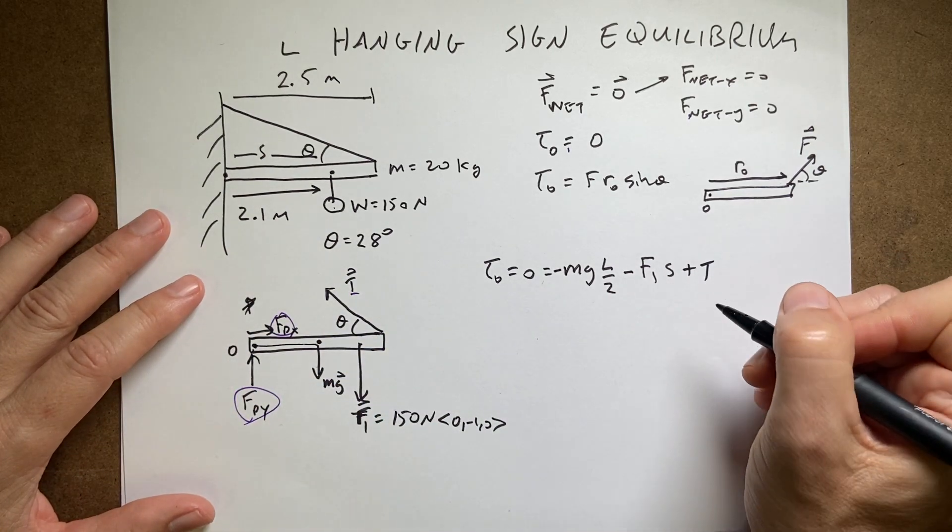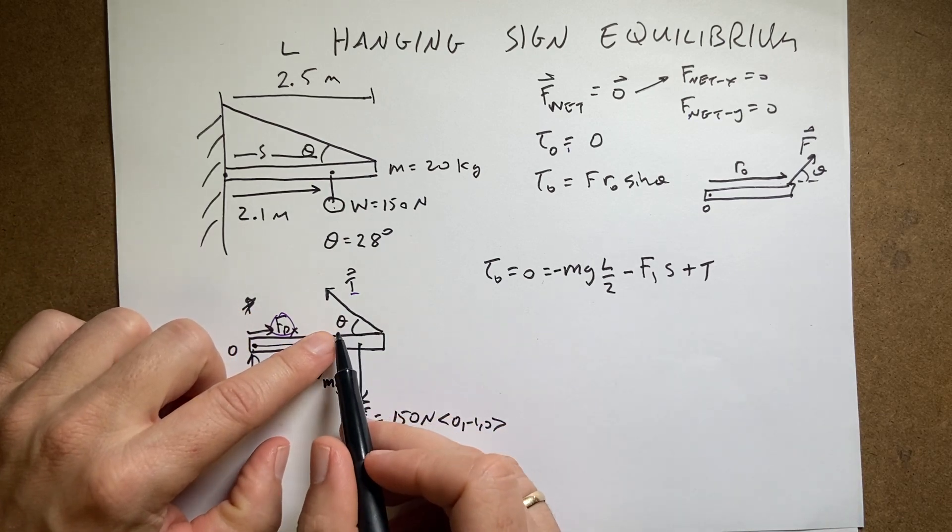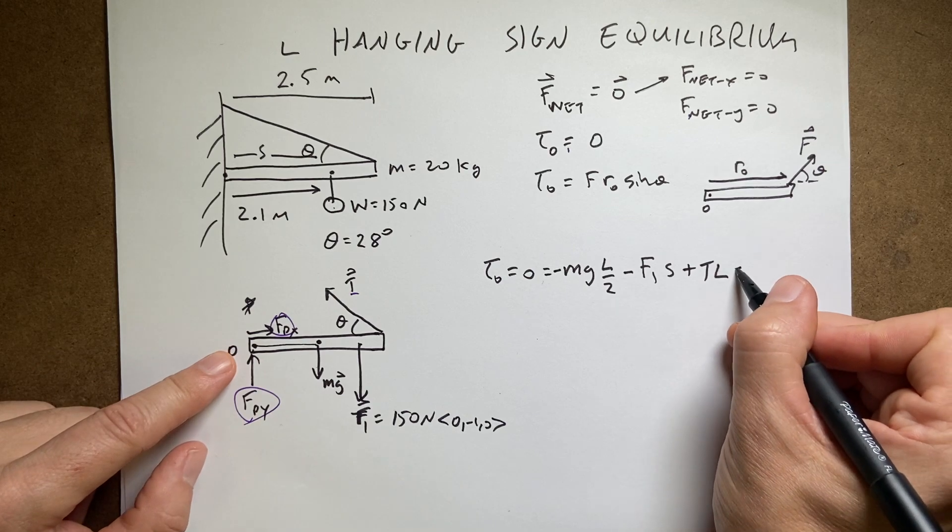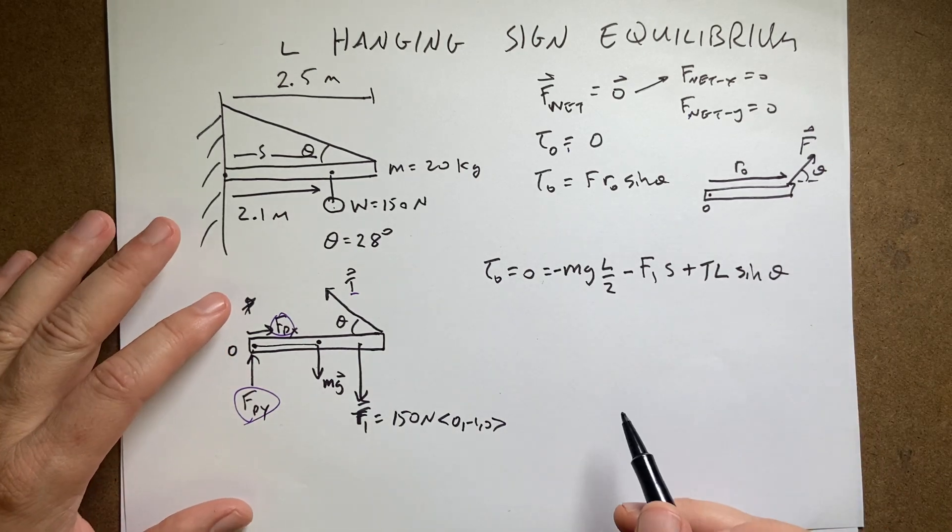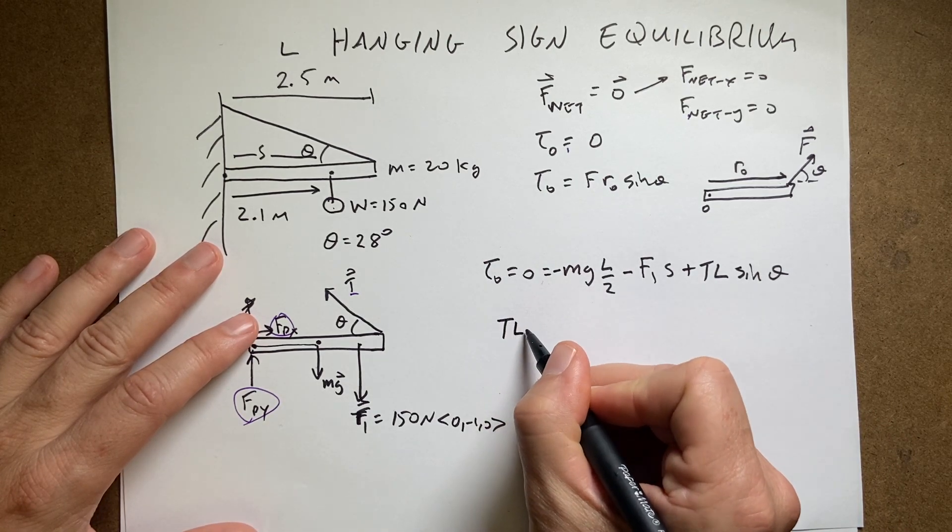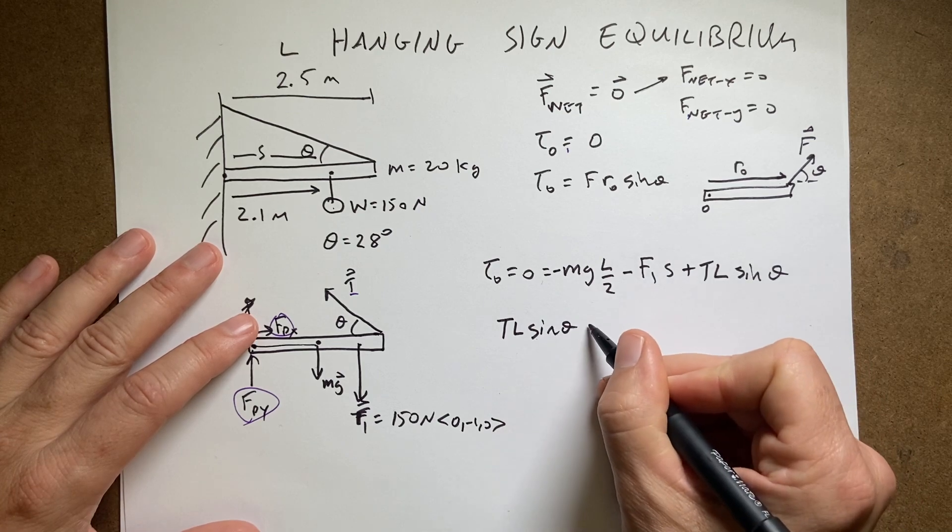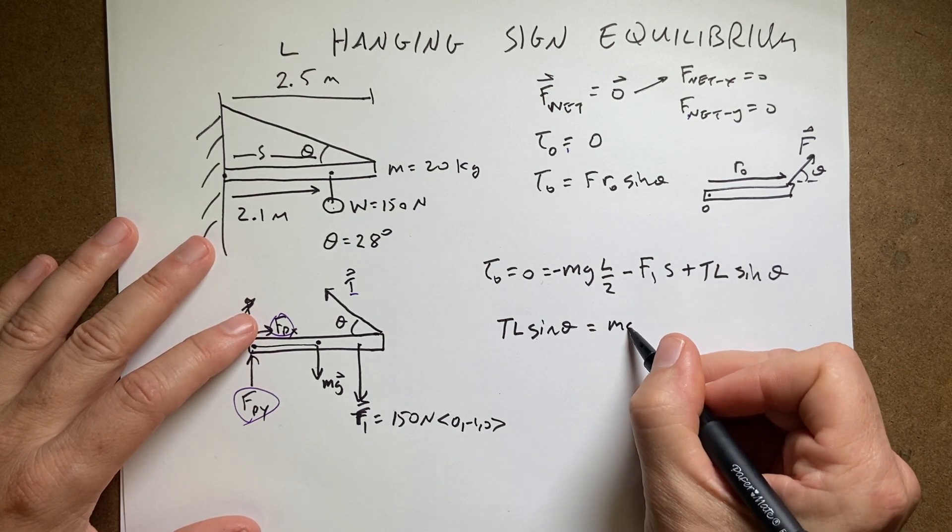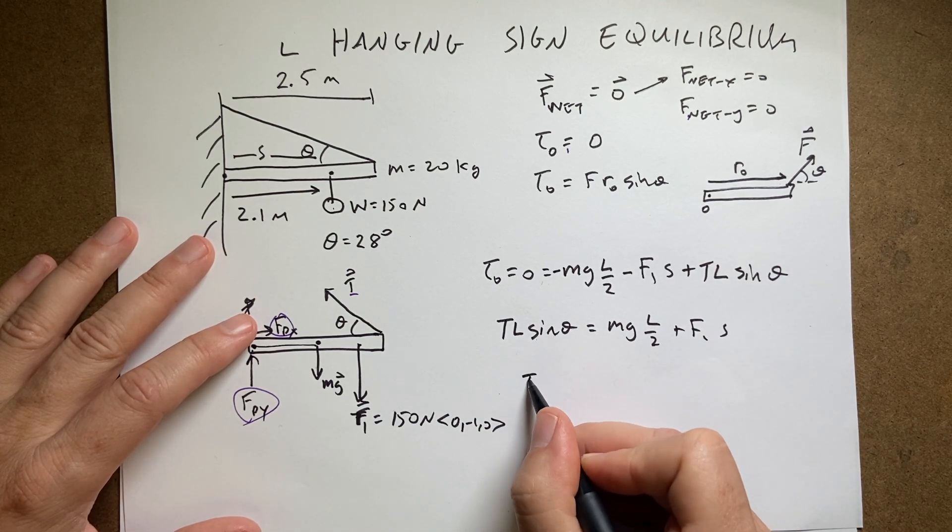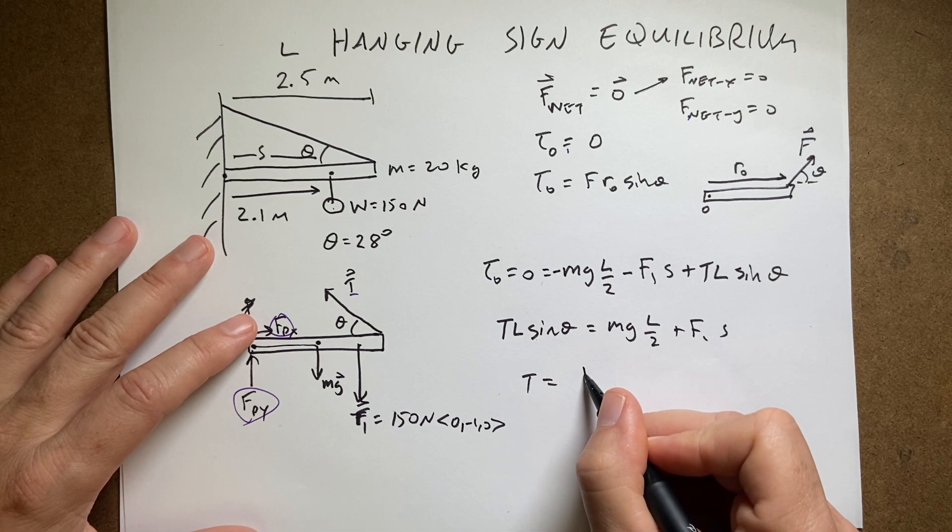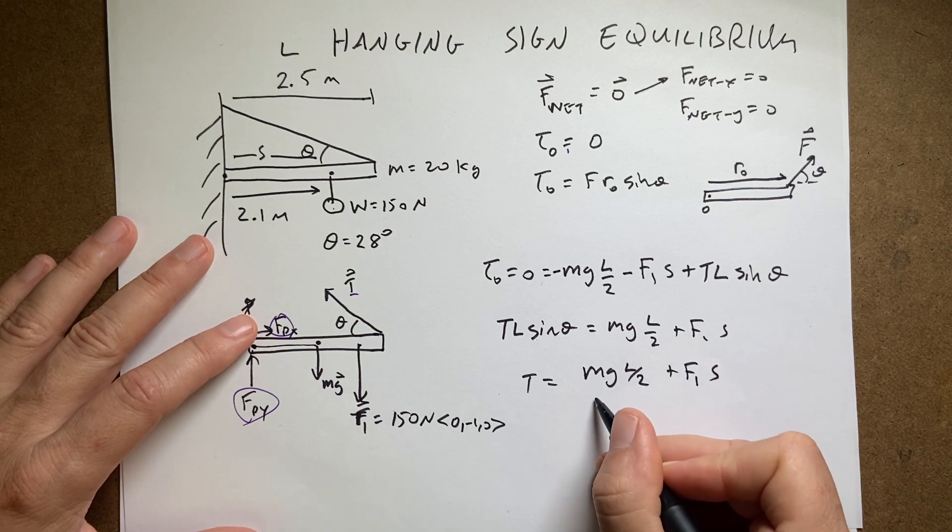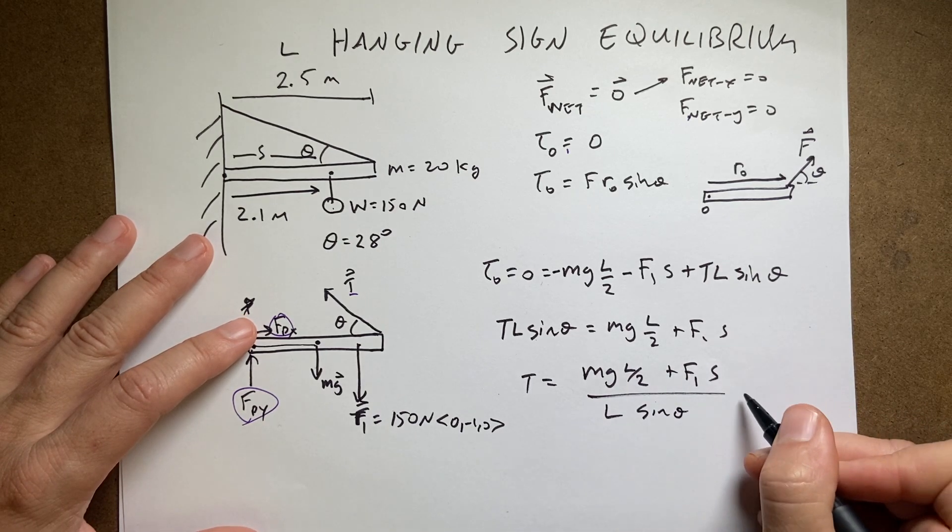So I'm going to say plus T, and then I can say the length of that is the torque arm. And then I'm going to have sine of theta and those all have to add up to zero. And I want to solve for T. So let's add these two things to both sides. I get T L sine theta equals M G L over two plus F1 S. And then I can say T equals M G L over two plus F1 S all of that over L sine theta. And that's it.